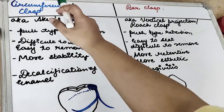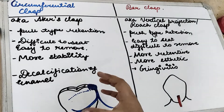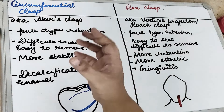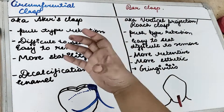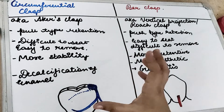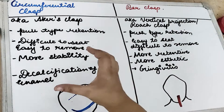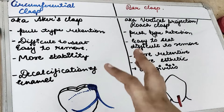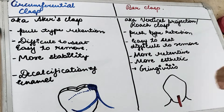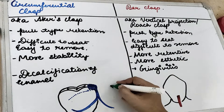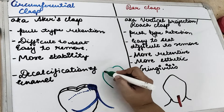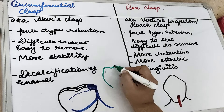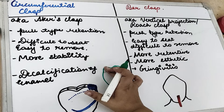As the name suggests, a circumferential clasp is the one which is going to cover the tooth in a circumference. The main purpose of a clasp is to provide retention. So what are the factors which depend on the stability, retention, and support of a tooth?